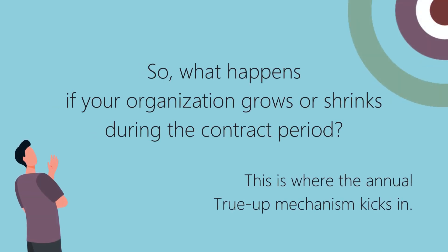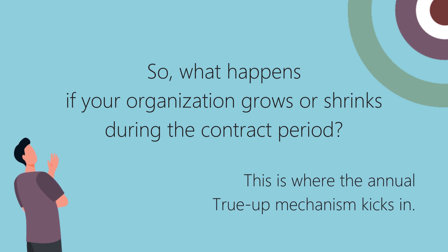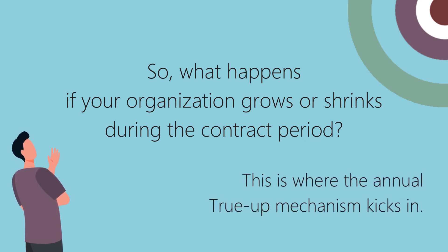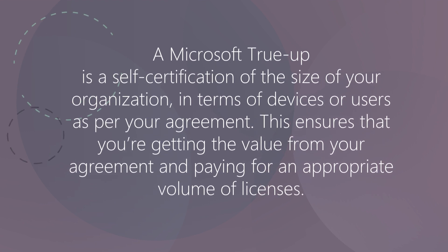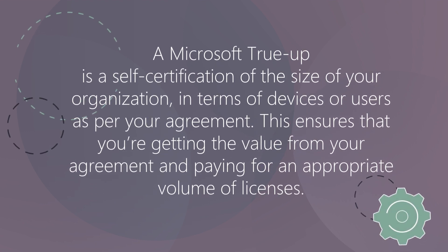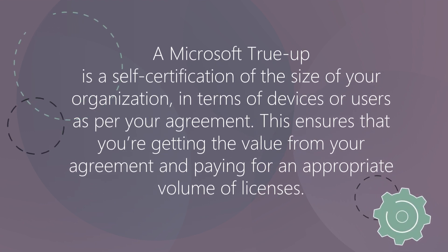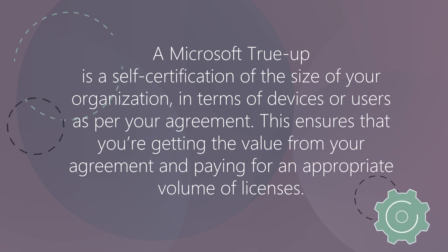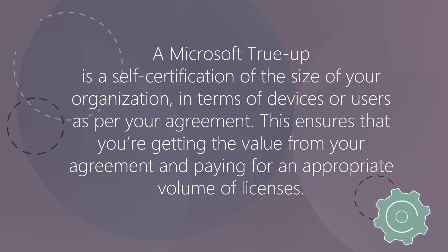What happens if your organization grows or shrinks during the contract period? This is where the annual true-up mechanism kicks in. A Microsoft true-up is a self-certification of the size of your organization in terms of devices or users as per your agreement. This ensures that you're getting the value from your agreement and paying for an appropriate volume of licenses.